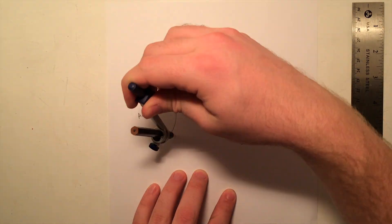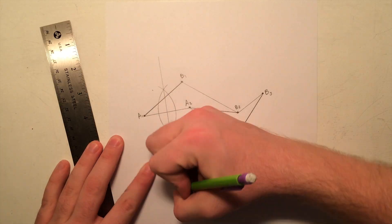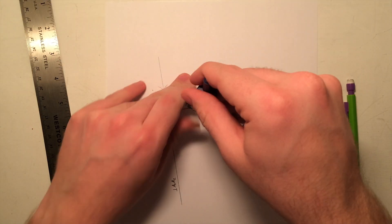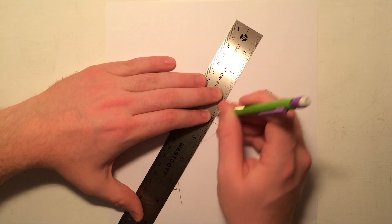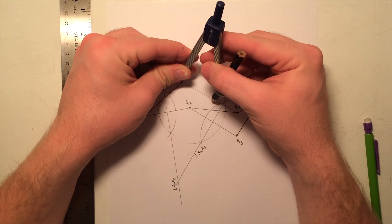Once these vectors are drawn, construct a perpendicular bisector of each displacement vector. This is done by using a compass and choosing a radius that is greater than half the length of the displacement vector. Construct a partial circle using this radius from both ends of the displacement vector. Then, draw the perpendicular bisector through the two partial circle intersections.